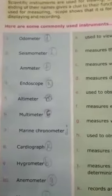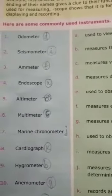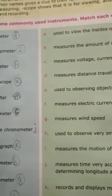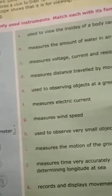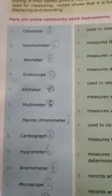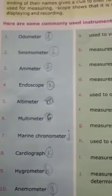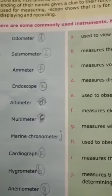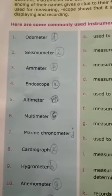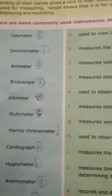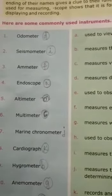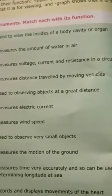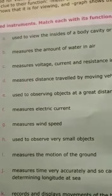First one: odometer. Commonly used instruments are given below. You have to match with its function, for what purpose it is used. Odometer - the answer is option D: it measures the distance traveled by moving vehicles.